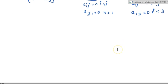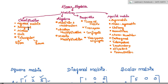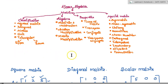The final one is null matrix. We all know null matrix is a matrix that has all the elements 0. Now that we have covered square matrix, diagonal, scalar, unit, triangular, and null matrix, the classification part is over. Now let's move to the algebra part.